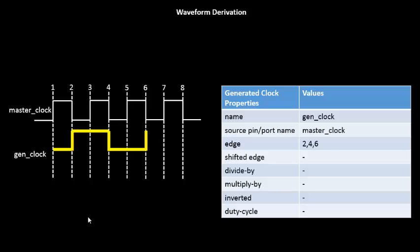Moving on, let's look into another example where we have been given an inverted option as well — the inverted switch is on. So we have all these definitions and along with them, the inverted switch is turned on. In this case, how will the waveform look? It's pretty simple. Initially, you draw the waveform without the inverted option and then you just invert it. In this case, half of the job is creating the waveform with the first three options, and now we just have to invert it.